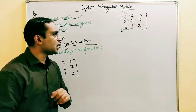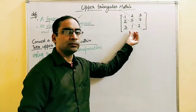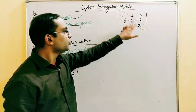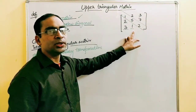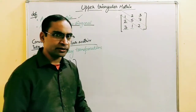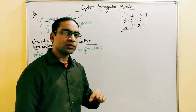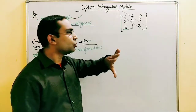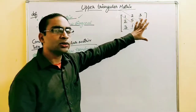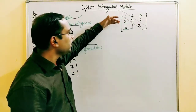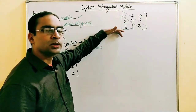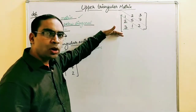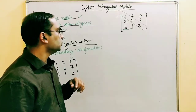I'll tell you three steps to convert any matrix into upper triangular form. Step one: convert column by column — start with the first column, convert all elements below the diagonal in that column to zero, then move to the next column, and so on. Step two: within each column, work from top to bottom — convert the top element first, then move down.